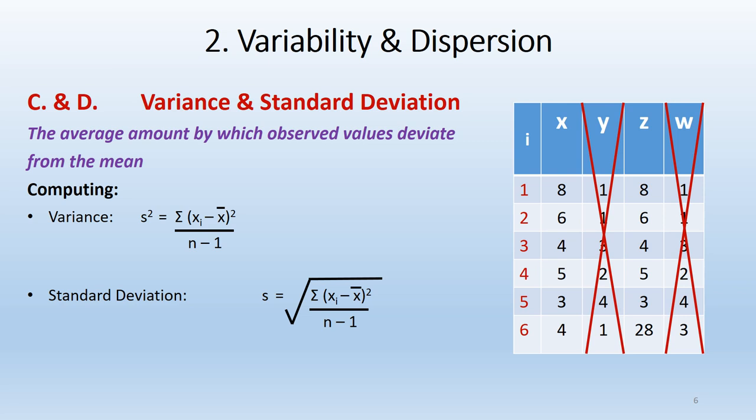Both formulas are what we call the unbiased or adjusted formulas for variance and standard deviation. The raw formulas tend to be slightly off when used with sample data. The only adjustment is in the denominator: instead of dividing by n, we divide by n minus 1. The population formulas would have just n in the denominator. This seemingly minor adjustment is the distinction between population formulas and the sample or adjusted formulas we use in this class.